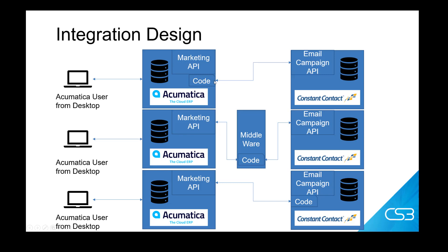The middle example shows creating a standalone application to handle the translation of data and the push or pulls between the two systems' APIs. Depending on the intended process, the application contacts the Acumatica marketing API to retrieve or send data. It then uses a send or retrieve data operation to complete the process with Constant Contact's email campaign API, or vice versa as the situation requires.